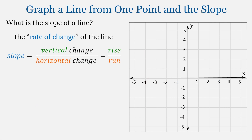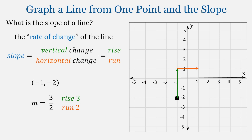Let's see an example. We have the point negative 1, negative 2. We plot that point on our graph — this is our starting point. We have a slope of 3 halves, so that means we're going to rise 3 and run 2. We can put a point there. Now from this second point, let's rise 3 and run 2, and that's the location for our third point. Connecting these points, we get our line.